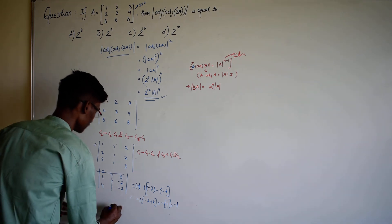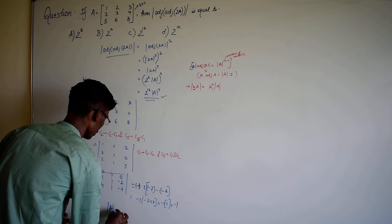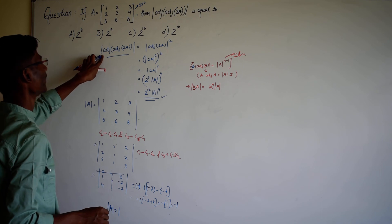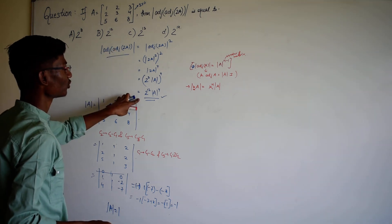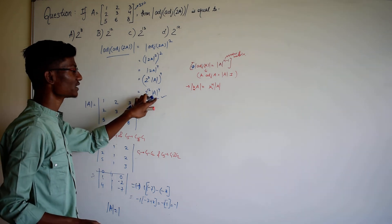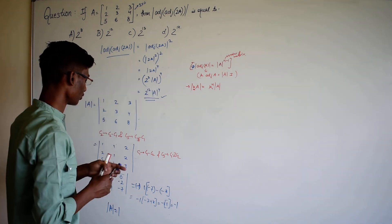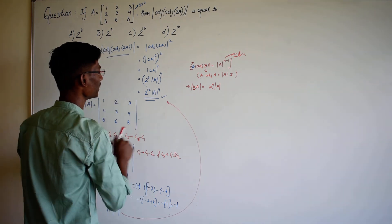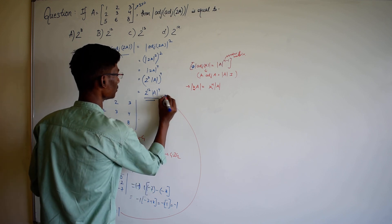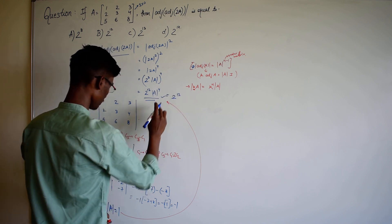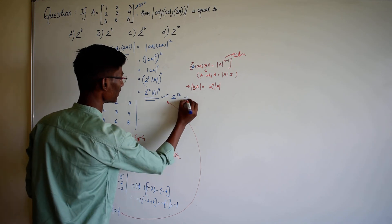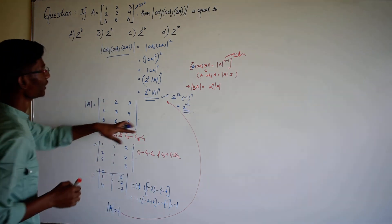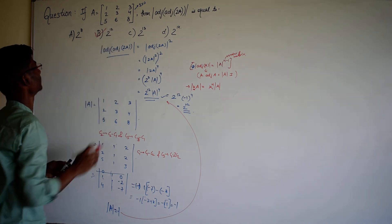So we get that the value of determinant of A equals minus 1. But we have to find the value of determinant of adjoint of adjoint of 2A, which equals 2 raised to power 12 times determinant of A raised to power 4. Substituting, we get 2 to power 12 times (minus 1) raised to power 4, which equals 2 to power 12. So the correct option is option B: 2 to power 12.